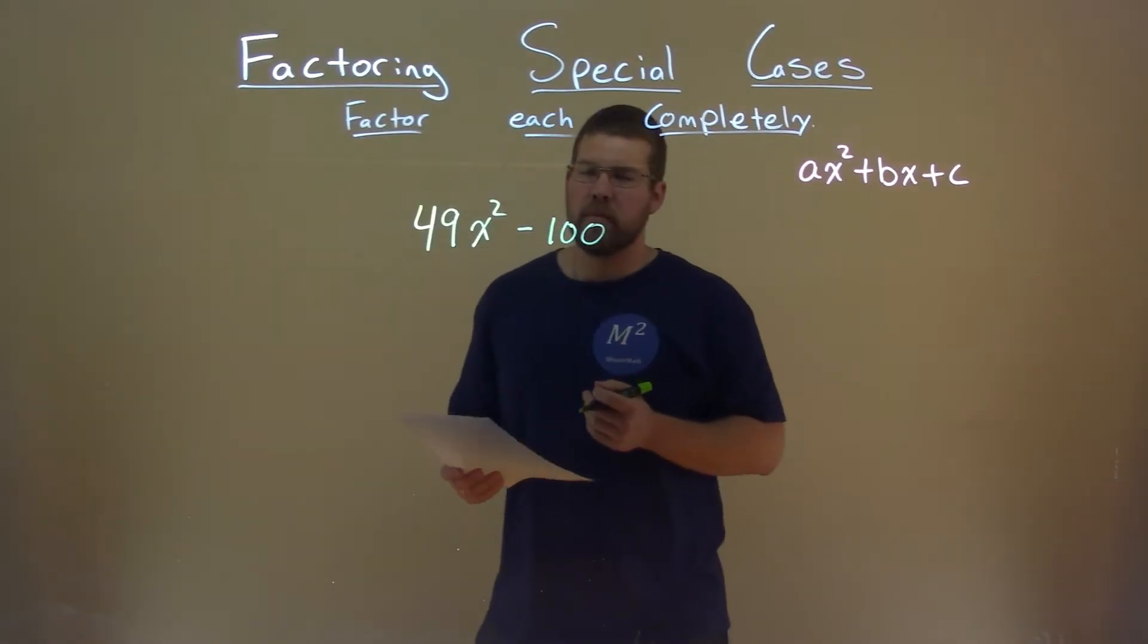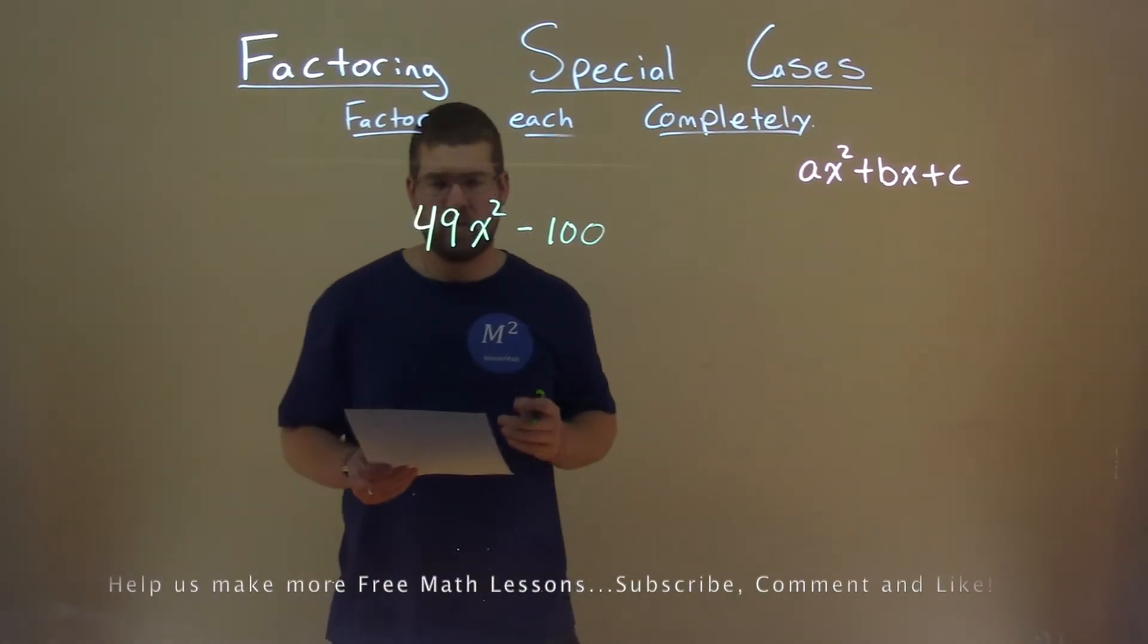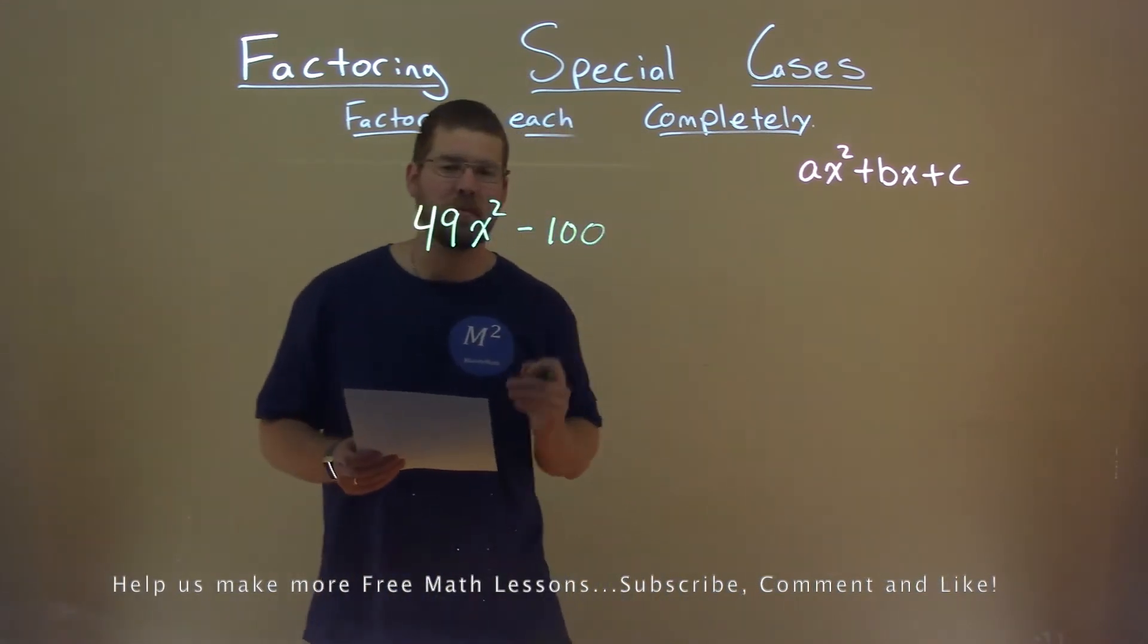We're given this problem right here, 49x squared minus 100 and we want to factor this completely.